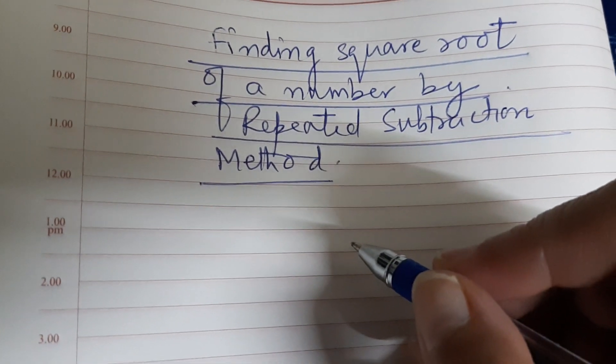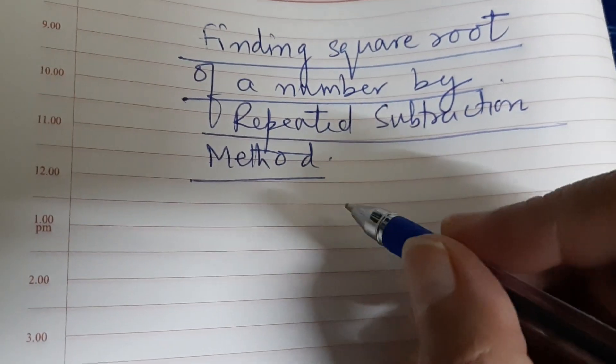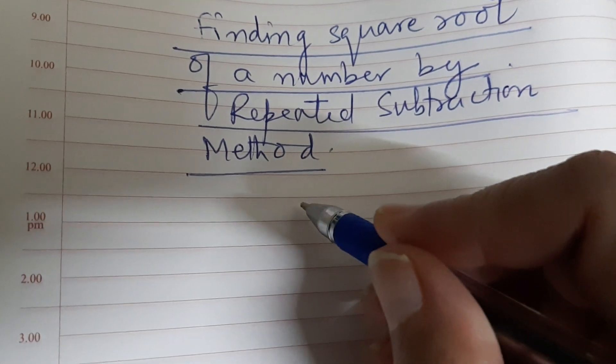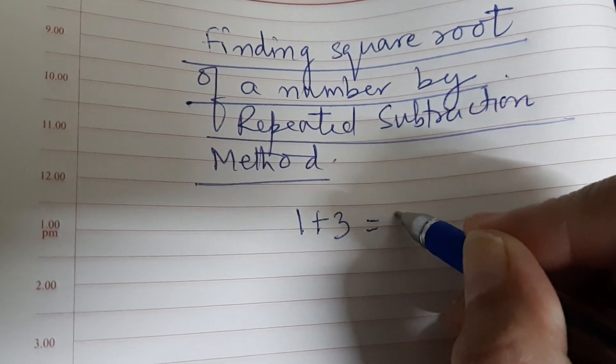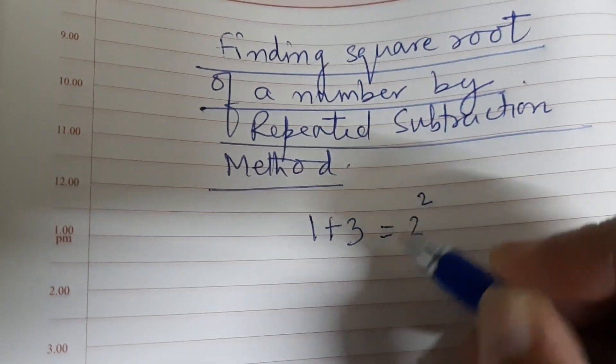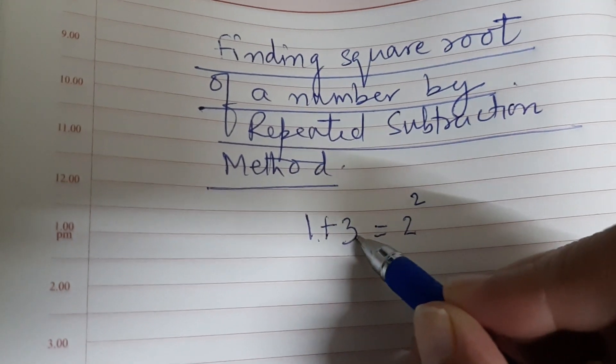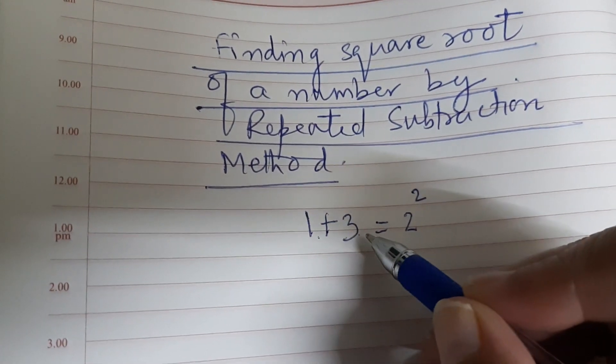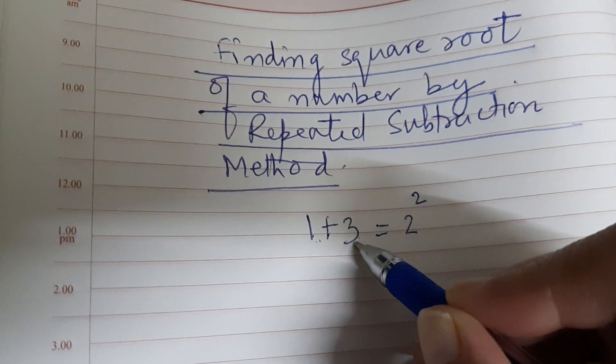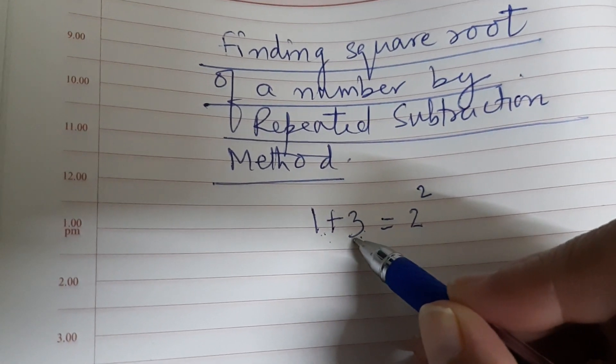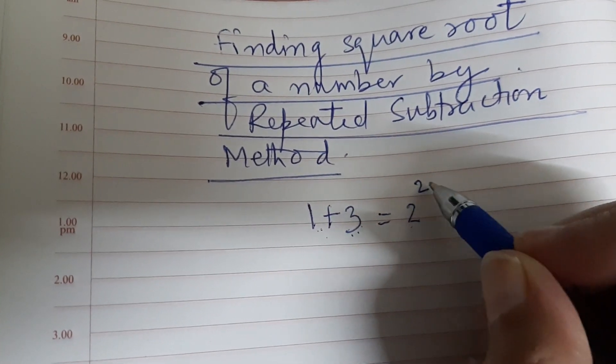1 plus 3 is equal to 2 squared. Here we are adding first two consecutive odd natural numbers, so we are getting 2 squared because 1 plus 3 is 4, which can be written as 2 squared.